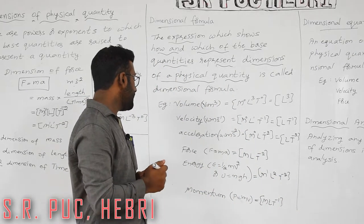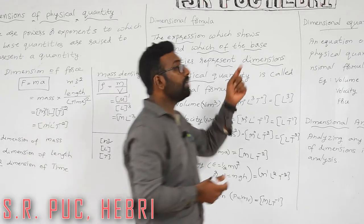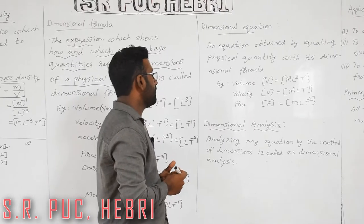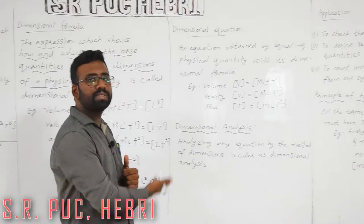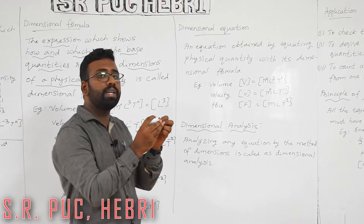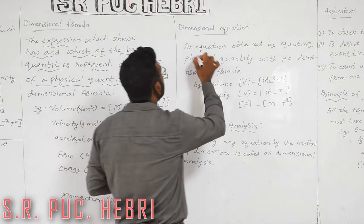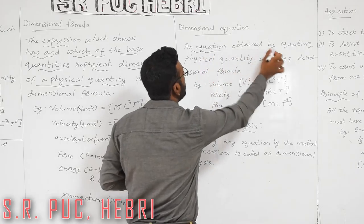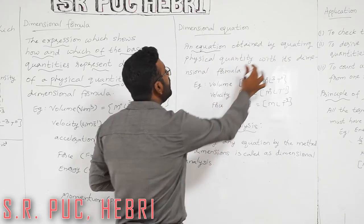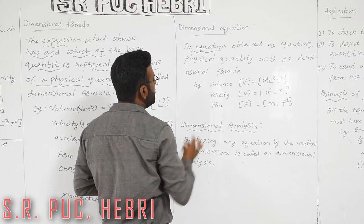You can carefully look at these and try to understand them. We will move on to the dimensional equation. It is the same idea — we just represent a quantity along with its dimension. A dimensional equation is an equation obtained by equating a physical quantity with its dimensional formula.